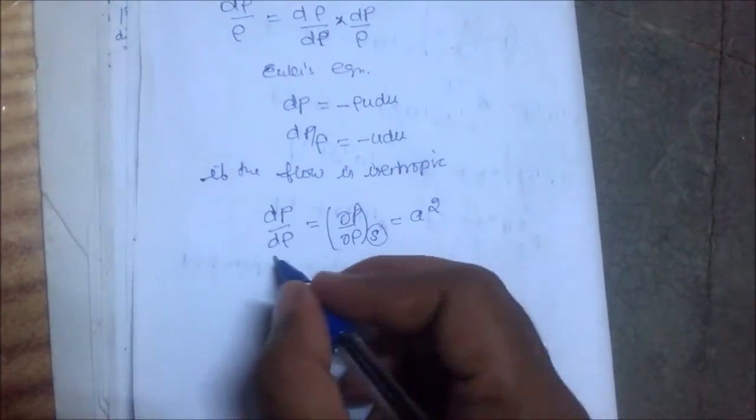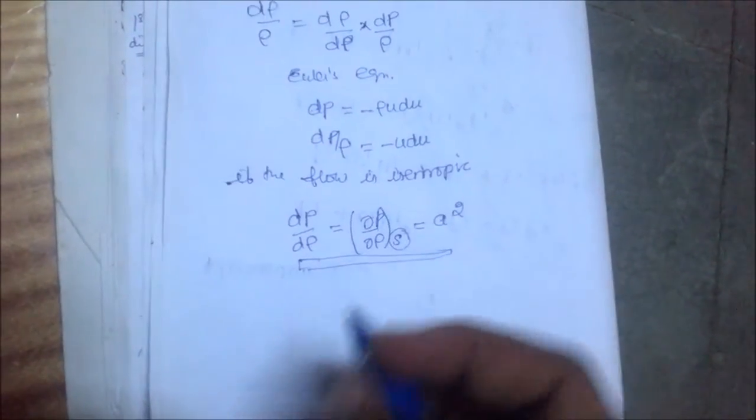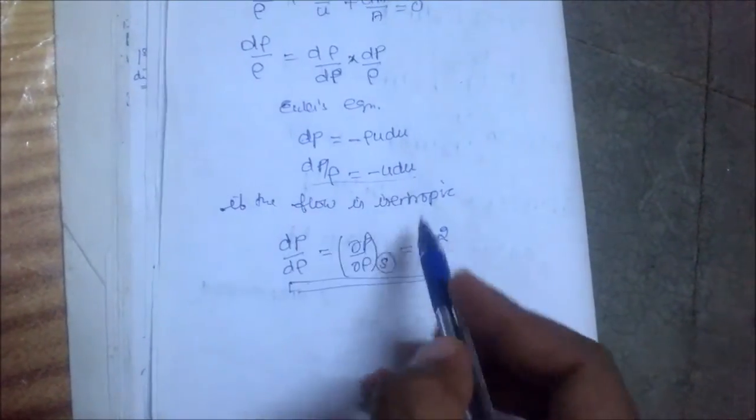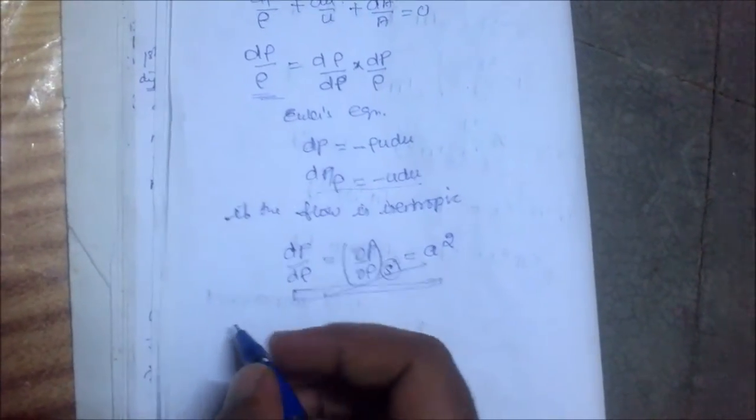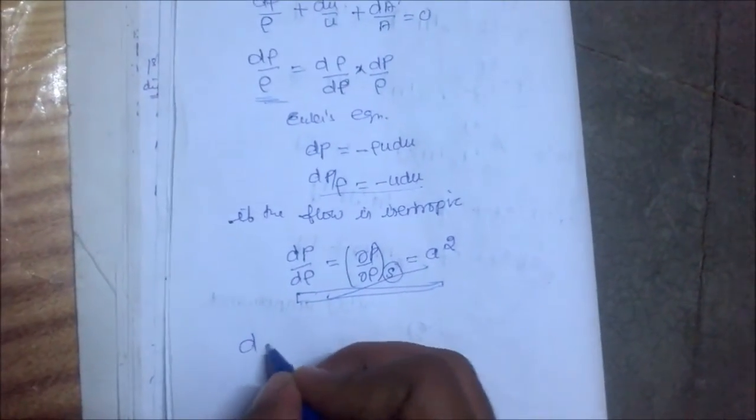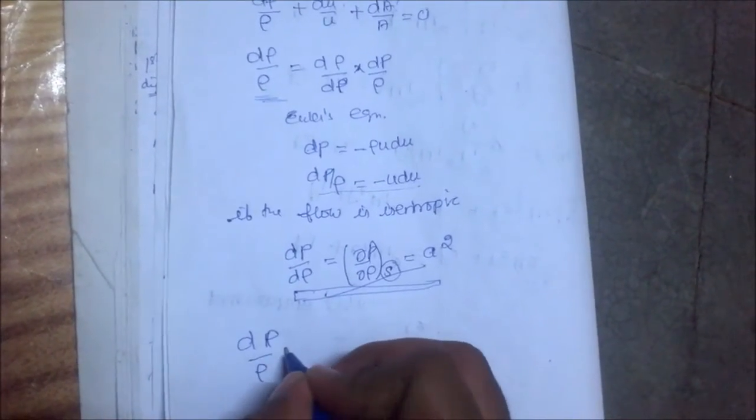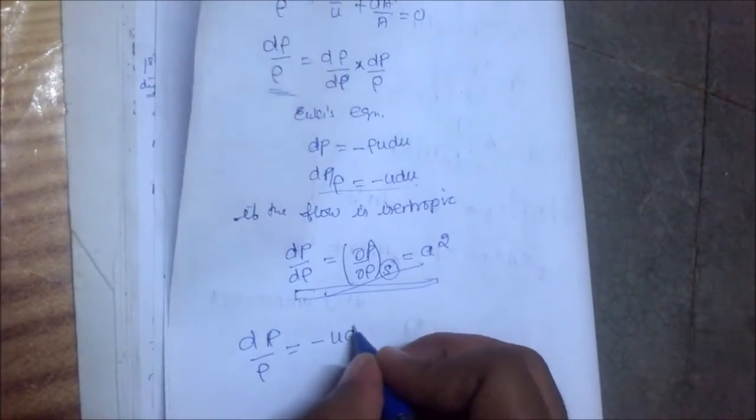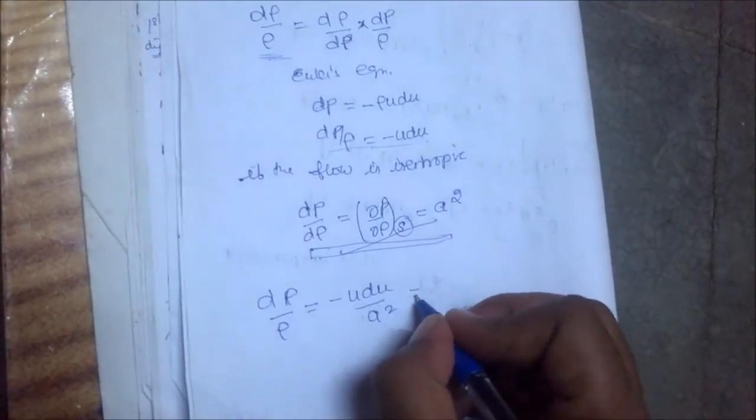We see this term in the speed of sound derivation. Now substituting these relations, we get d rho/rho = -u*du/a^2.